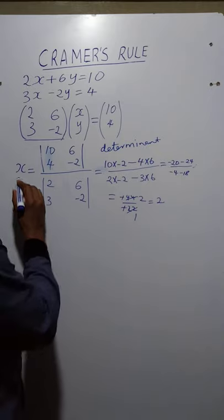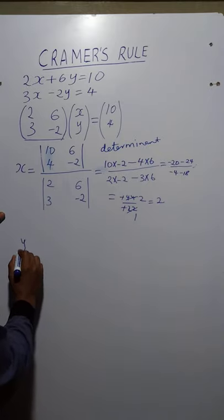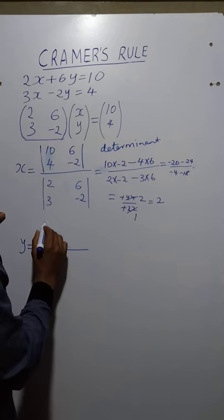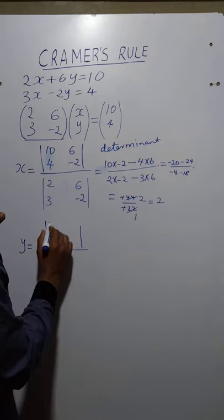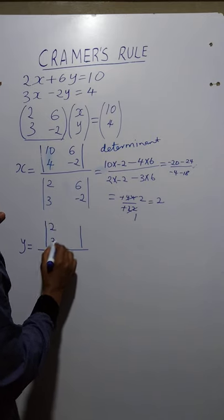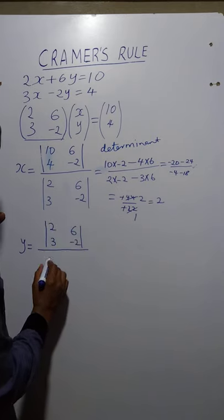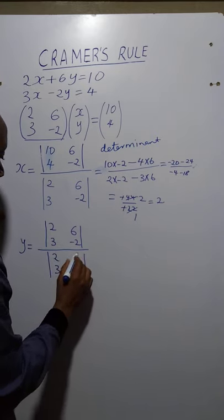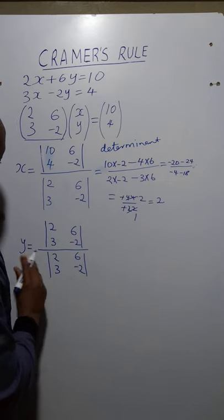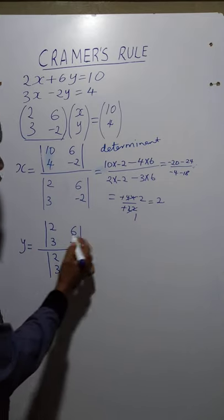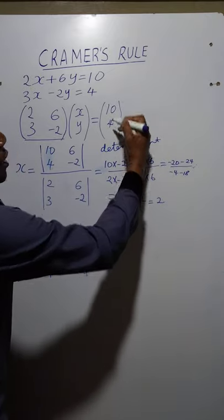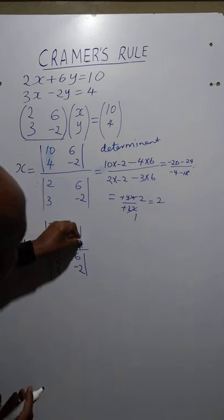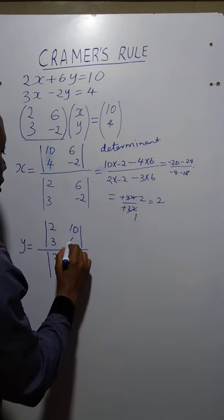We now do the same for y. y is equal to the determinant of a modified matrix. On the denominator side we have the same: 2, 3, 6, negative 2. But because we are solving for y, we shall replace the coefficients of y with the equation constants — replacing those with 10 and 4.